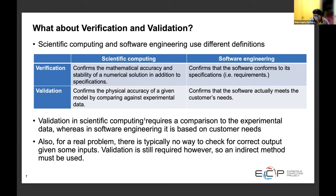Validation in software engineering is used to check whether the code meets the customer's needs — system-level or acceptance testing may be performed. But in scientific computing, validation is much more complex, because it may involve determining the accuracy of the model, comparing the output with experimental results, and sometimes using a computational model to make predictions that can later be verified.